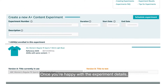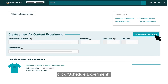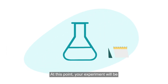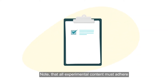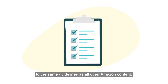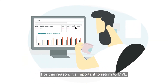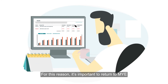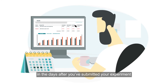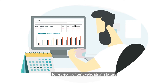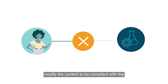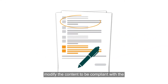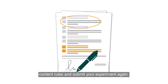Once you're happy with the experiment details, click Schedule experiment. At this point, your experiment will be scheduled pending content validation. Note that all experimental content must adhere to the same guidelines as all other Amazon content. For this reason, it's important to return to MYE in the days after you've submitted your experiment to review content validation status. If you find your content has failed validation, modify the content to be compliant with the content rules and submit your experiment again.